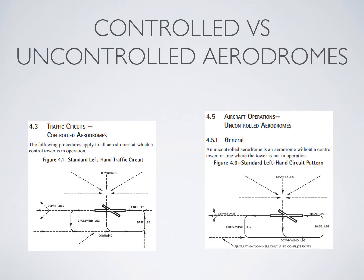In my previous video, when we were talking about the circuit, I was really focusing on circuits in controlled airspace. In a control zone, you have a controller who is keeping traffic separated. They have the authority to clear you into the circuit however would be most convenient for them. Therefore, in an entry to the circuit pattern for a controlled airport, you can enter pretty much as cleared — at a 45 to the downwind, straight into the downwind, straight into the base, or straight into final are all perfectly acceptable.